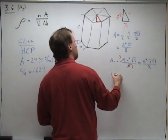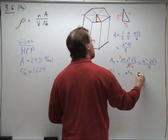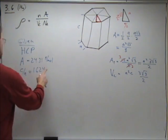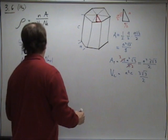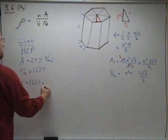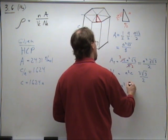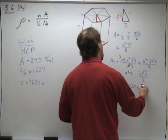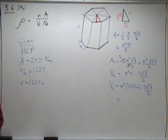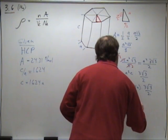To get the volume of the cell, we take that area and multiply it by the length. So we have a squared c times 3 square root of 3 over 2. We have a given c to a ratio of 1.624, so that means c equals 1.624a. So in terms of just a, our cell volume is a squared times 1.624a times 3 times the square root of 3 all over 2. This gives us 4.22a cubed.